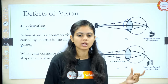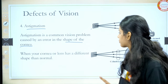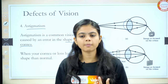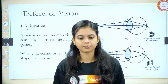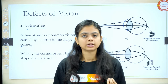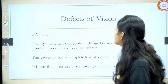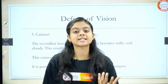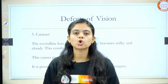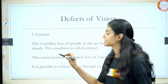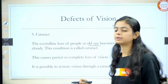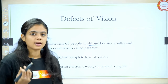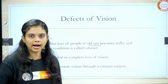In astigmatism defect, the shape of the cornea is not right, so the person is unable to see grid-like structures. To correct the defect, we use a cylindrical lens. Moving next to the defects of vision — cataract. Cataract is also an old-age, age-related disorder. You can see this kind of defect like presbyopia and cataract when people become old.